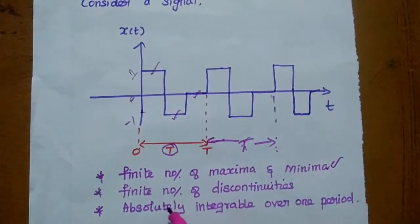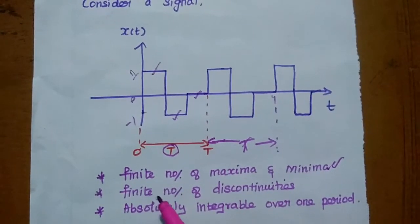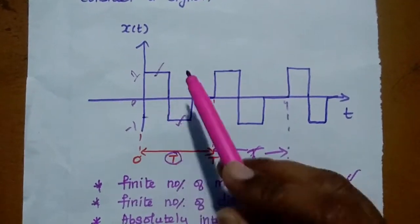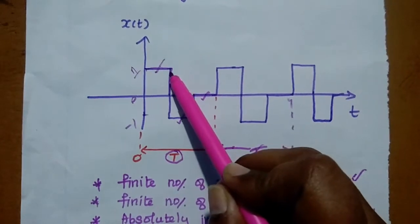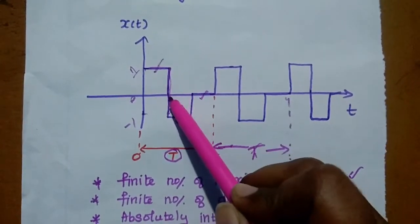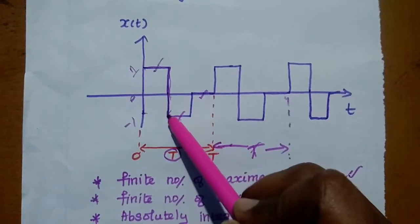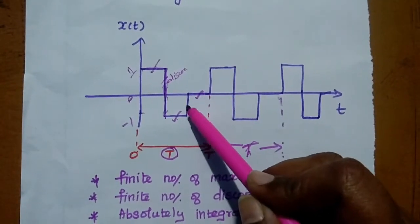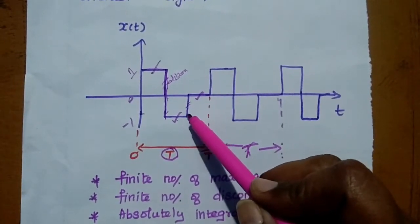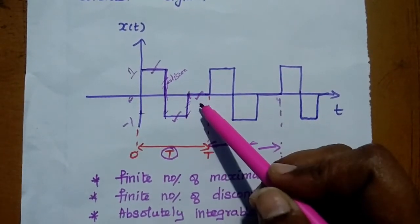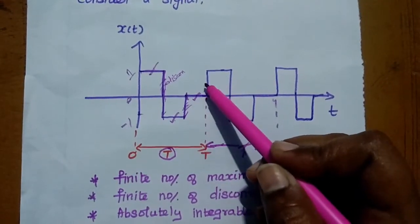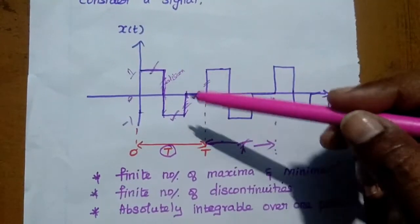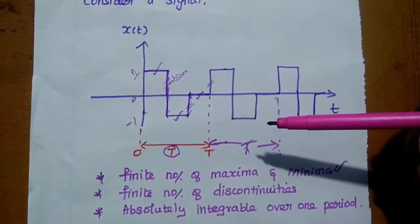What is the next condition? The next condition is the signal should have finite number of discontinuities. Discontinuities means for this continuous time signal, its value is 1 up to this. There is a sudden change. This is called discontinuity. From 1 to 0, 1 to minus 1, there is a change. So this portion is called discontinuity. At this point, it is changed from minus 1 to 0. This is second discontinuity. This one is third discontinuity. So it has finite number of discontinuity.